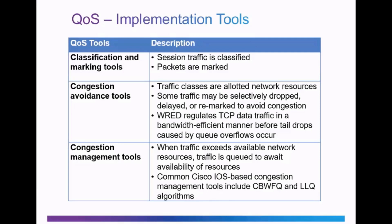Weighted Random Early Detection regulates TCP data traffic in a bandwidth-efficient manner before tail drops caused by queue overflows — basically congestion — occur. Under congestion management tools, when traffic exceeds available network resources or we have congestion, traffic is queued to await the availability of those resources. Common Cisco IOS-based congestion management tools include Class-Based Weighted Fair Queuing and Low Latency Queuing, or the CBWFQ and LLQ algorithms.